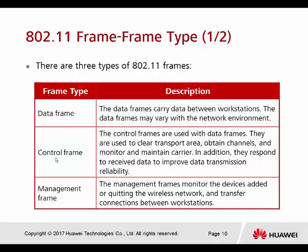Control frames are used to confirm the channel before sending a frame. One AP may connect to many STAs, so control frames determine which STA has the first priority to send. The last type is the management frame, which monitors devices and creates the wireless network. Management frames include probe request, probe response, beacon, association, and authentication frames.